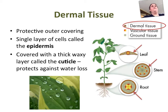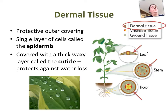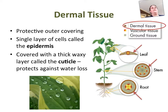The first type of tissue we're going to talk about is the dermal tissue, which is found on the outside. In the diagram, you can see dermal tissue is circled with a red arrow pointing to the dermal tissues found in the roots, in the stem, and also in the leaves. Dermal tissue is the protective outer covering made up of a single layer of cells called the epidermis, and it's usually covered with a thick waxy layer called the cuticle, which protects against water loss.